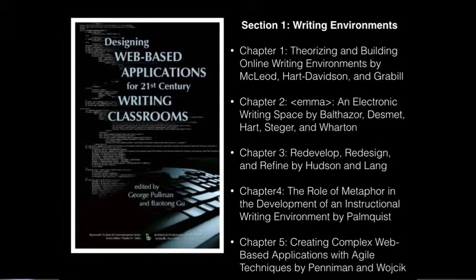The chapters include a chapter on Eli from Michigan State, a chapter on Emma and the origin stories of Emma from the University of Georgia, a chapter on Raider Writer from Texas Tech, the Writing at CSU portal, and finally a chapter by Michael Wojcik and Matt Penniman on the development of a writing platform in a community class and the importance of thinking about agile design in writing situations.